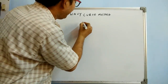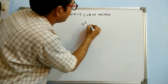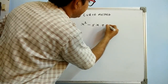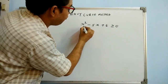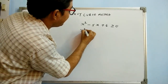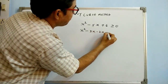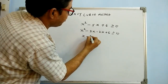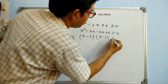Let's follow it with an example: x² - 5x + 6 ≥ 0. First, factorize this: x² - 3x - 2x + 6 ≥ 0, which gives (x - 3)(x - 2) ≥ 0.